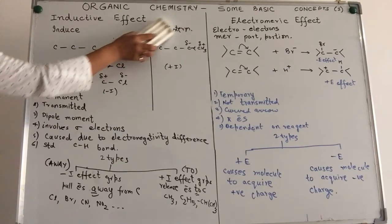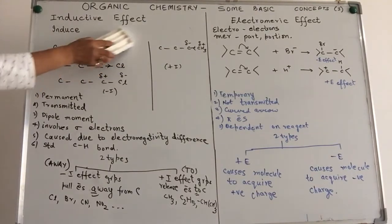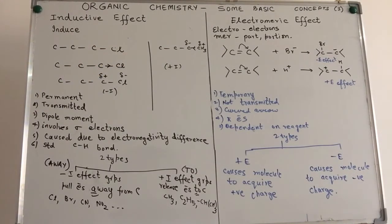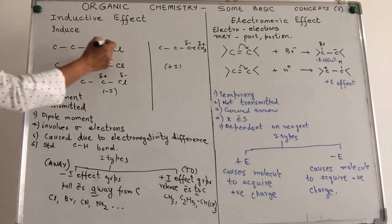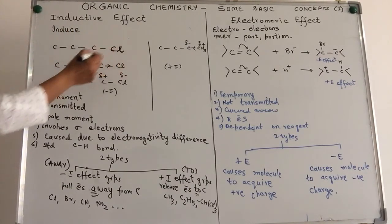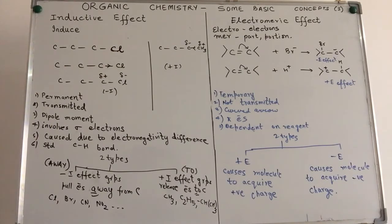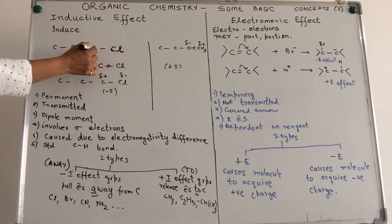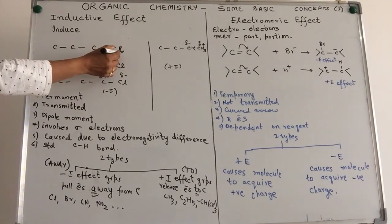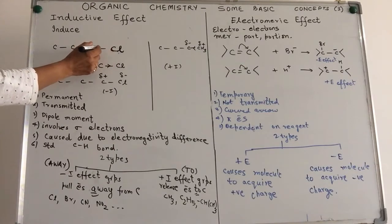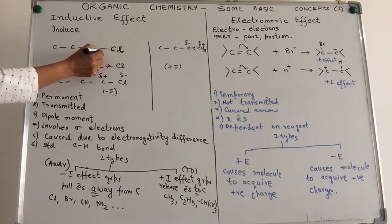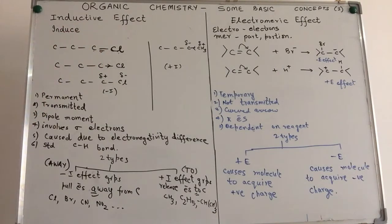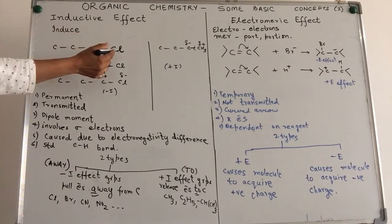Inductive comes from the word induced, meaning to cause an effect. What we observe in the case of organic compounds is, if you have a highly electronegative atom attached to a carbon atom, this electronegative atom tries to pull the electron pair towards itself. This electron pair is the sigma bonded electron pair — the electron pair involved in the formation of a sigma bond.